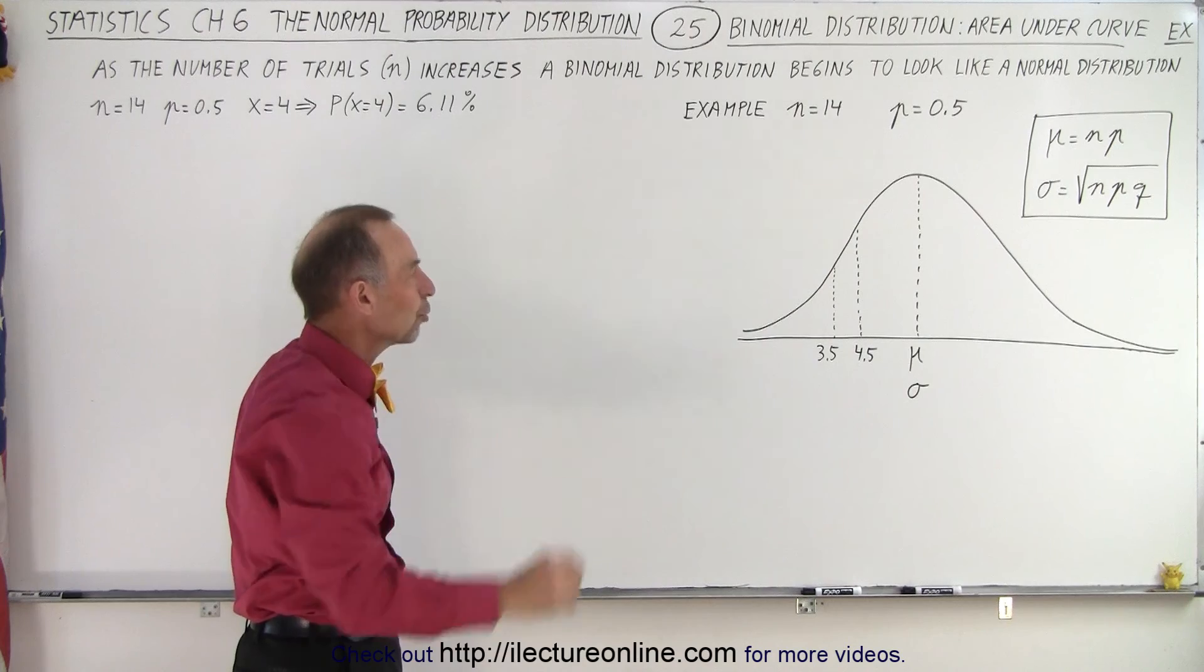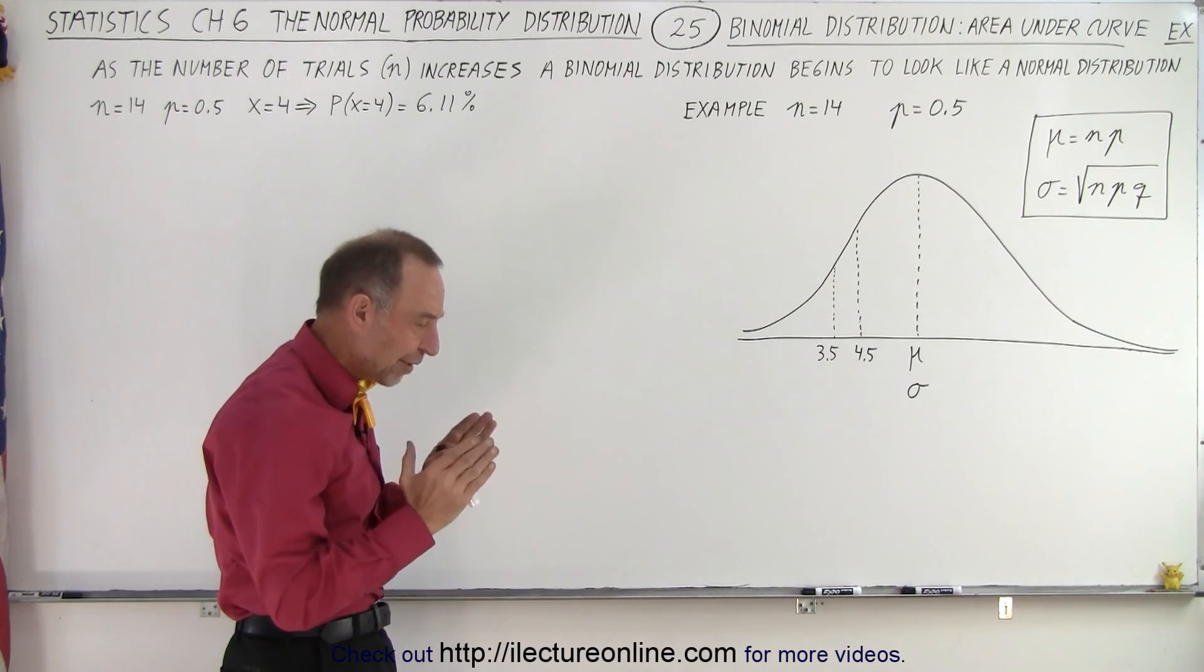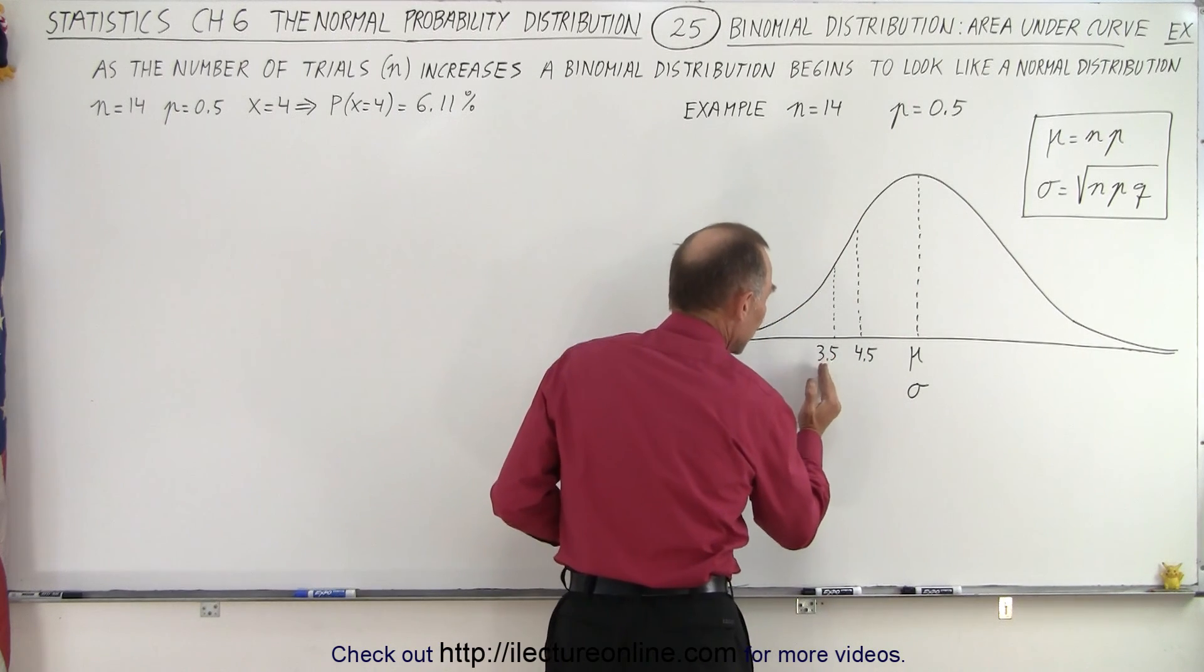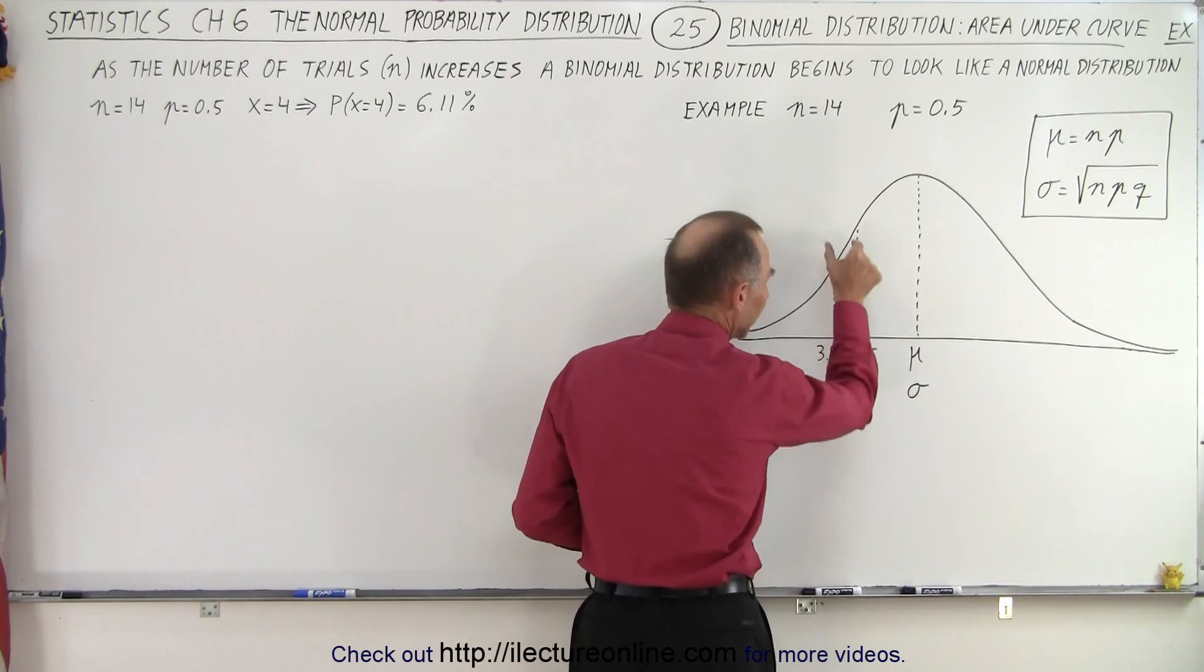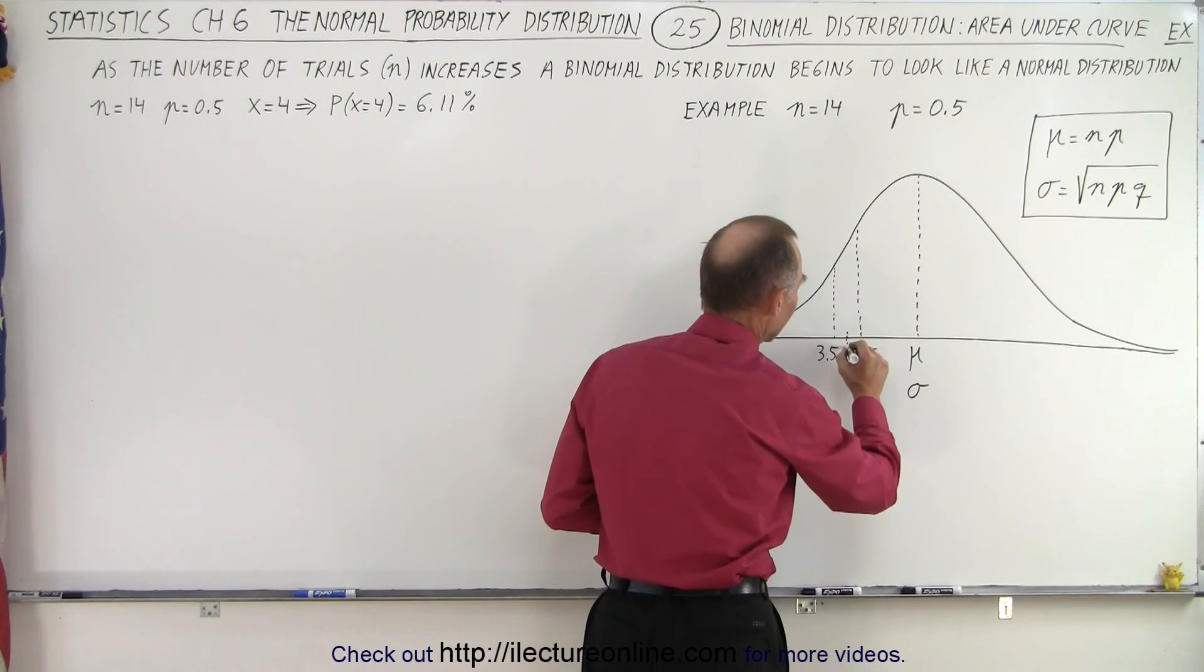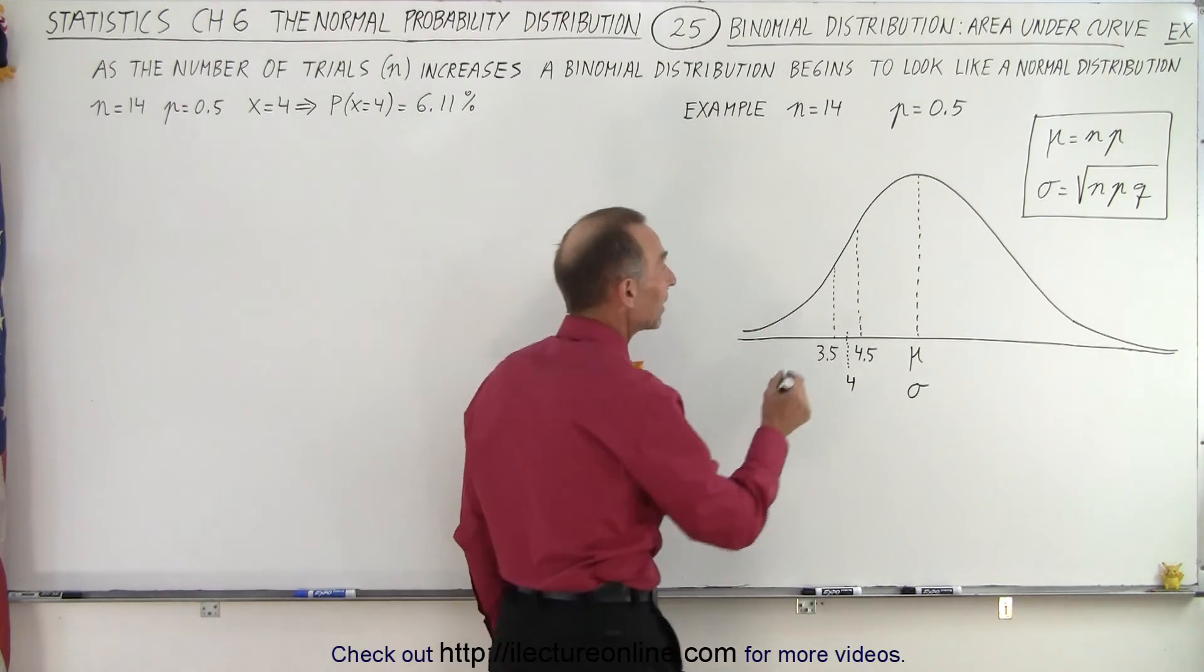So here we have a normal distribution, and in order to find the probability that the outcome will be 4, the boundaries of our region will be from 3.5 to 4.5 because we want to place it right in the middle so that 4 is exactly in the middle of those two endpoints.